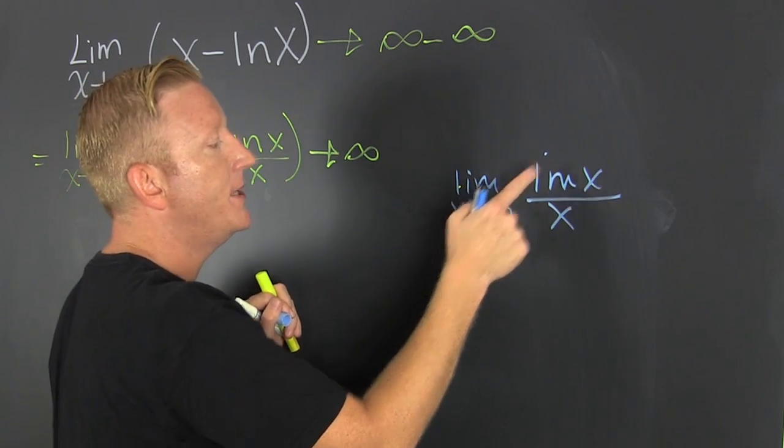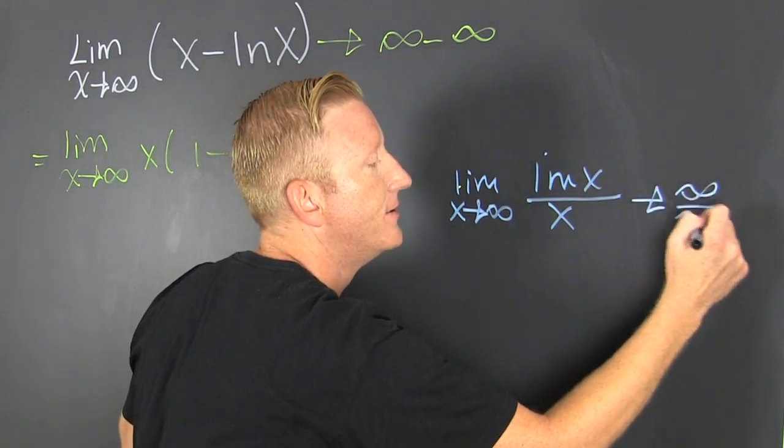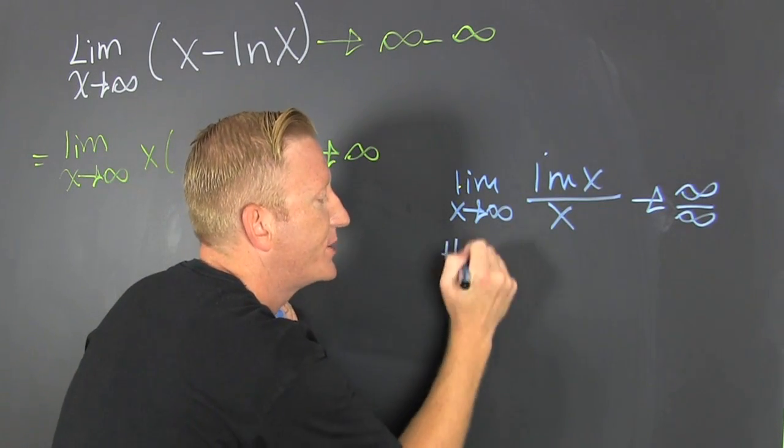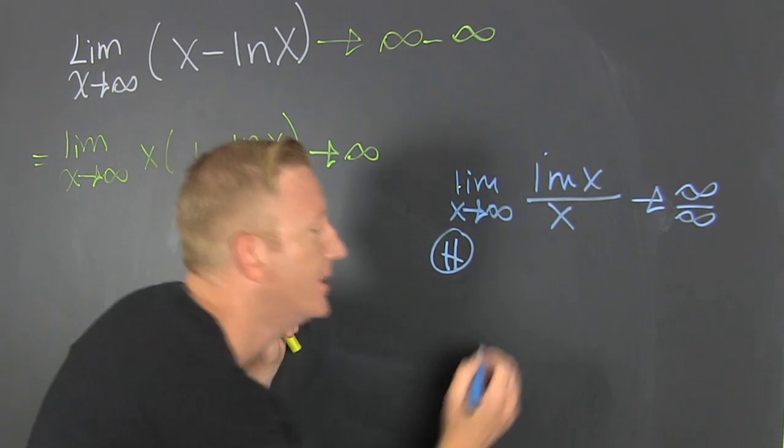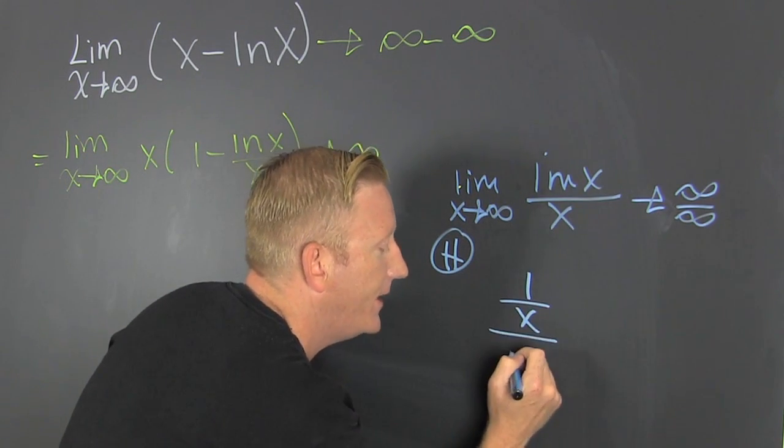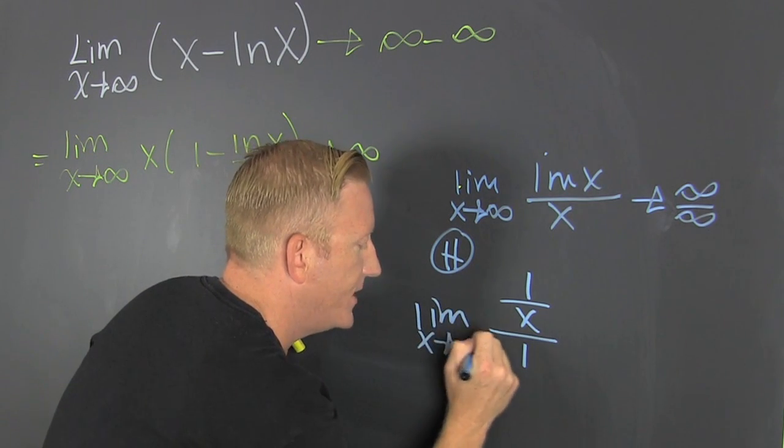All right. So that's infinity over infinity. Sure is. So then we can use L'Hôpital's. Let's go to the hop. So this is 1 over x divided by 1, the limit as x approaches infinity.